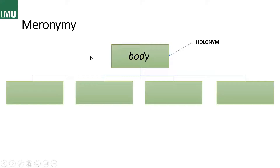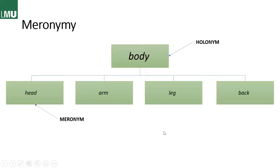A similar but distinct concept is meronymy, where we have one word that comprises many things — that is the holonym — and the parts of the holonym are referred to as the meronyms. Here we have 'body' as the holonym, and the meronyms would be the head, arms, legs, back — all the body parts you can imagine.